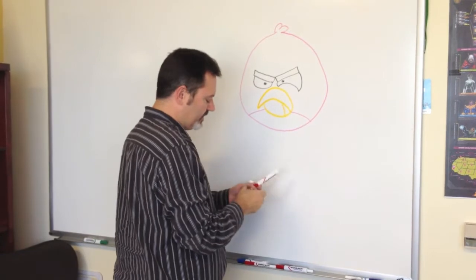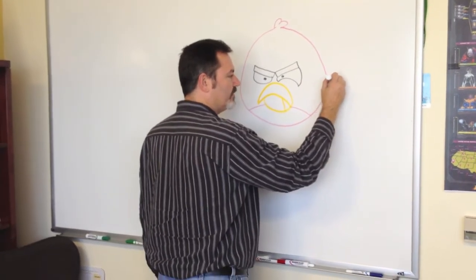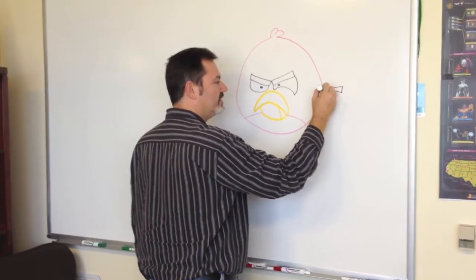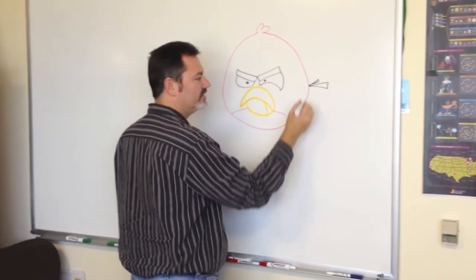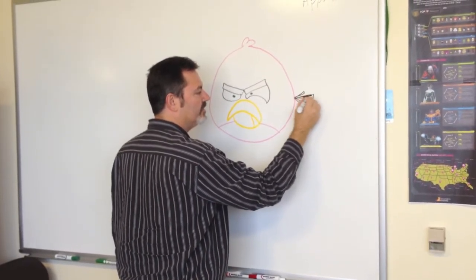And then on the very tip of his tail, right exactly in the very back, we come out with a little triangle, and then a little triangle, and then a little triangle. And that becomes his tail.